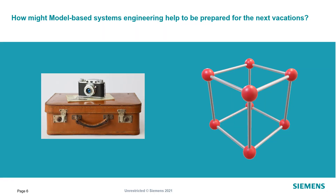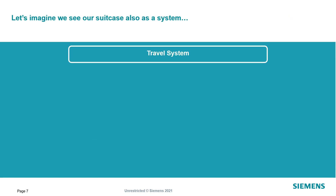So based on this problem, I was asking myself if there's perhaps a way how I could avoid this. And I was asking myself if a model-based systems engineering approach might help. So I was starting to think about the general approach of MBSE — really in a nutshell — and I was imagining my suitcase could be a system. Of course, we are not only talking about a suitcase.